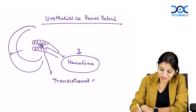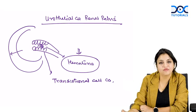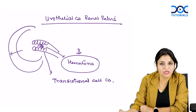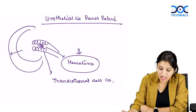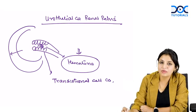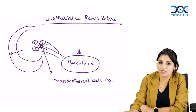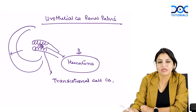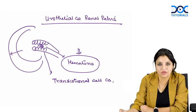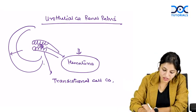Urothelial carcinomas of the renal pelvis are essentially a type of transitional cell carcinoma, similar to bladder cancer. Whenever a person has a urothelial carcinoma of the renal pelvis, there is usually an associated bladder cancer as well.